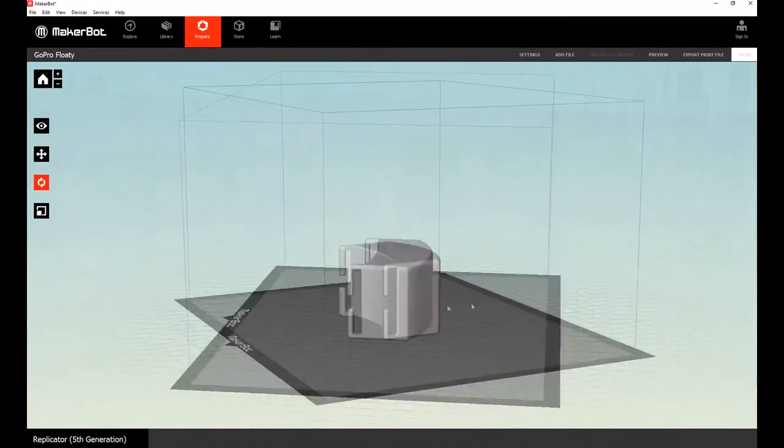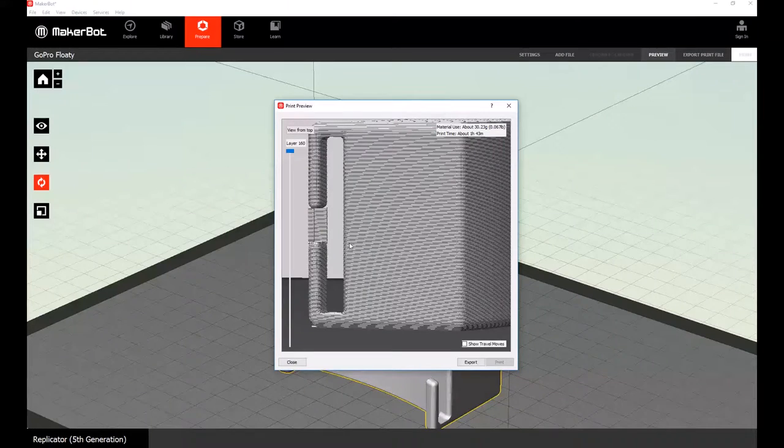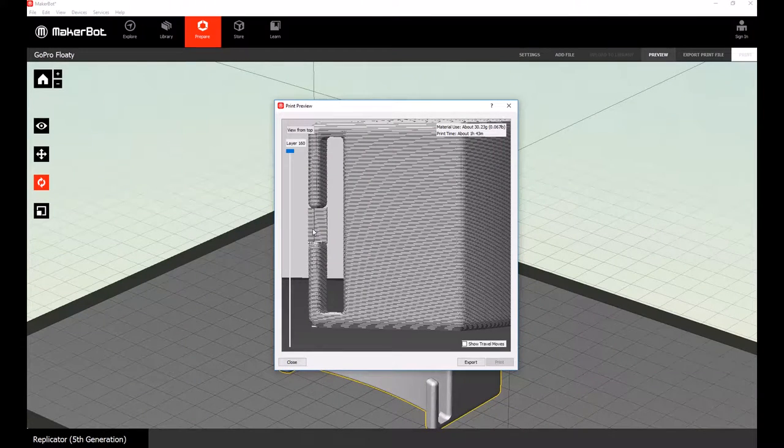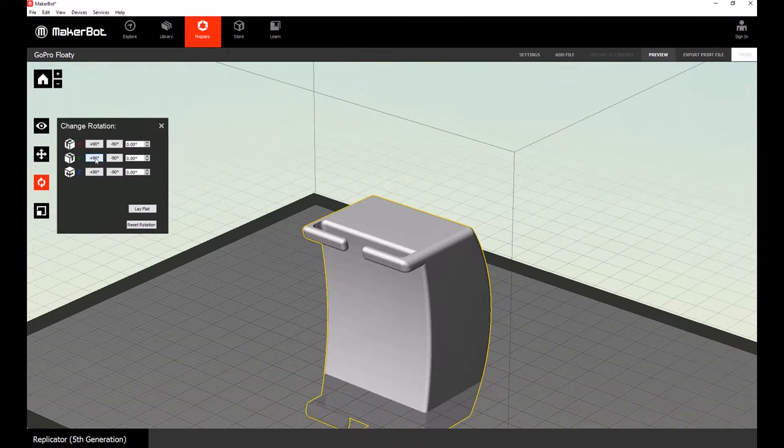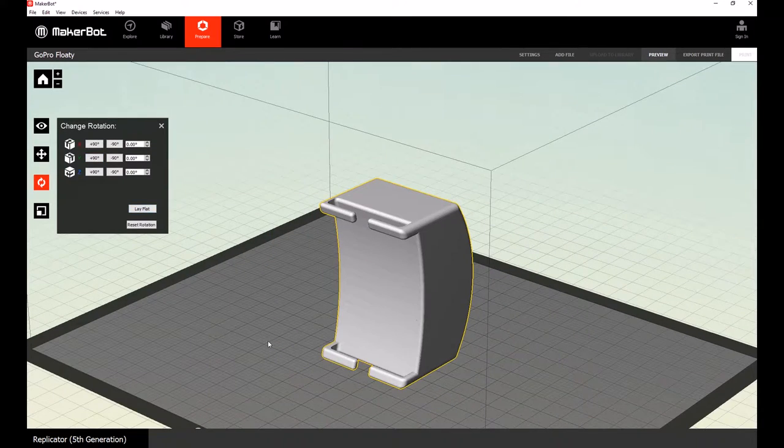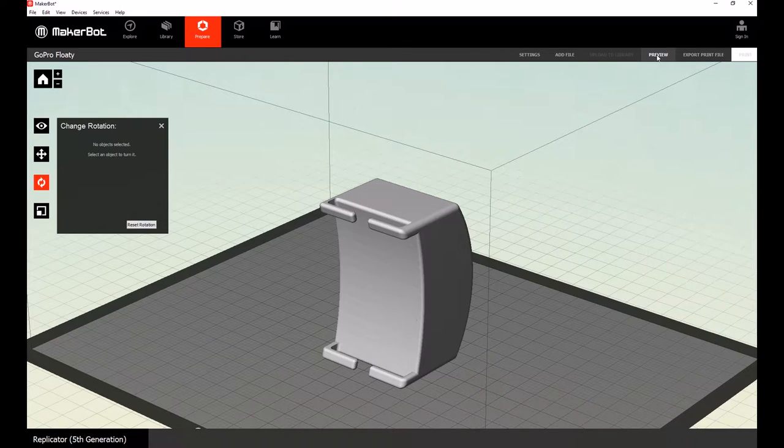I printed the part horizontally to minimize support because the support would only be required right here in between the pin gap. I should have oriented the part this way, so that the filament goes around the pins and carries the stresses better.